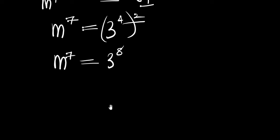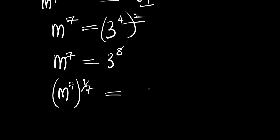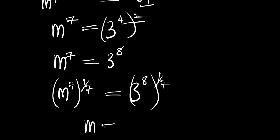What we are going to do is multiply the exponent by 1 over 7 on both sides. We have m to the power 7 times 1 over 7, and 3 to the power 8 times 1 over 7. So we will have m equals 3 to the power 8 over 7.